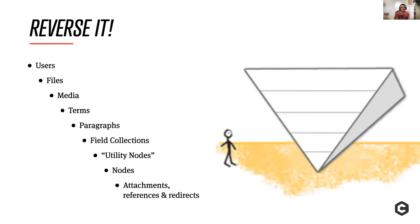When we go to migrate, we need to reverse this pyramid. We start from the basics — the users, mostly editors — then we build up to the files, from files we build the media entities, then we bring in all of the taxonomy terms. It's important to add terms at this stage because some of them can use media, and most of them are used by paragraphs and nodes above them.